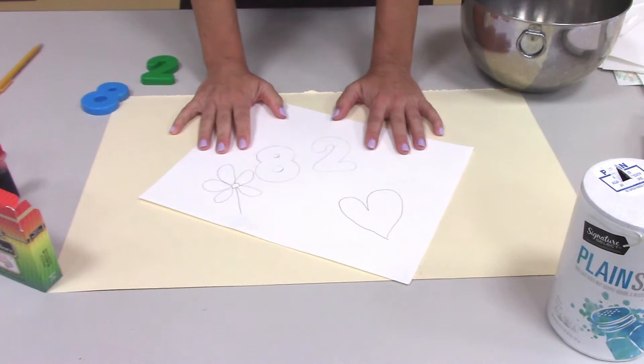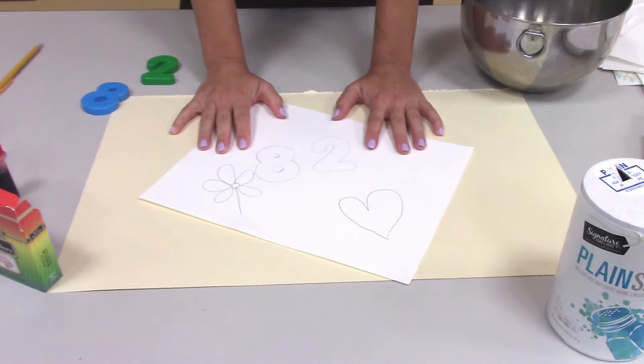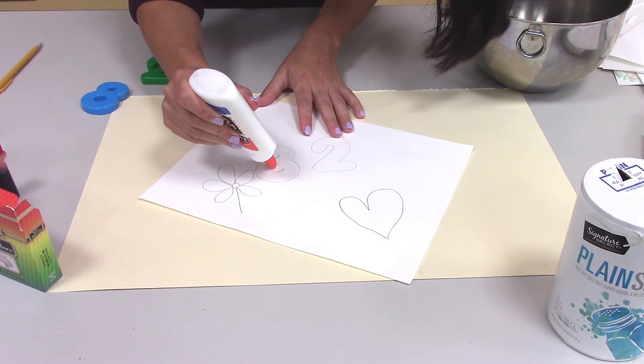Okay. Whatever it is you want to draw, once you're all done with your beautiful image, your beautiful design, you're going to want to take your glue and you're going to want to have a steady stream of glue so that you cover up the pencil markings exactly.